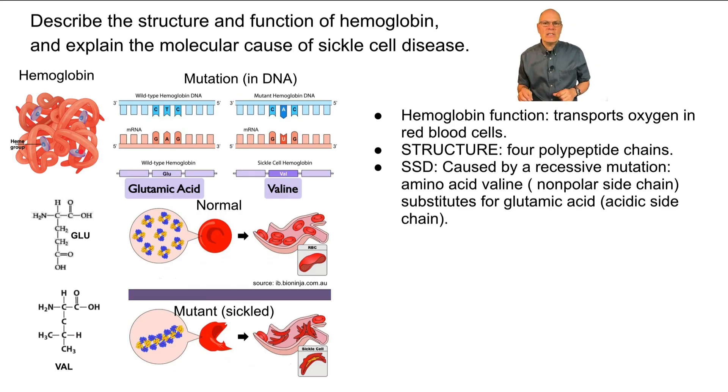Sickle cell disease is caused by a recessive mutation. We'll cover that in unit five. But the key idea is that there's a mutation that causes the amino acid valine over here to substitute for glutamic acid.